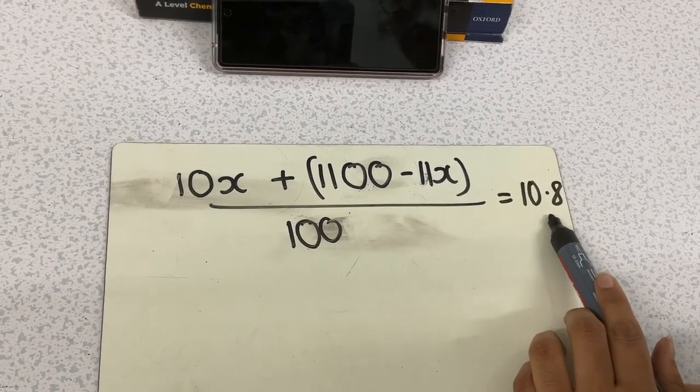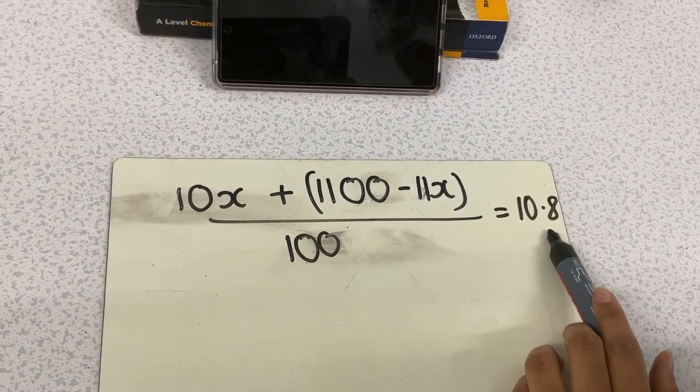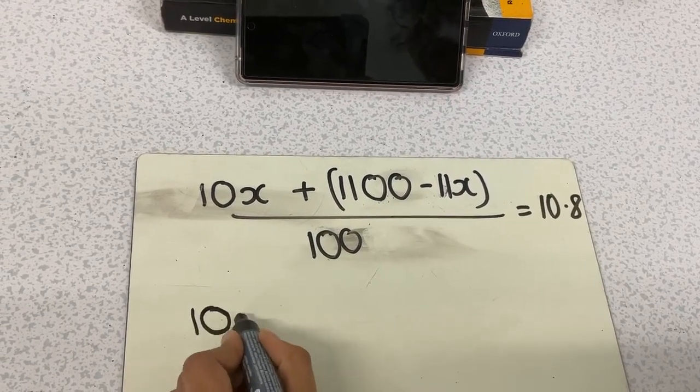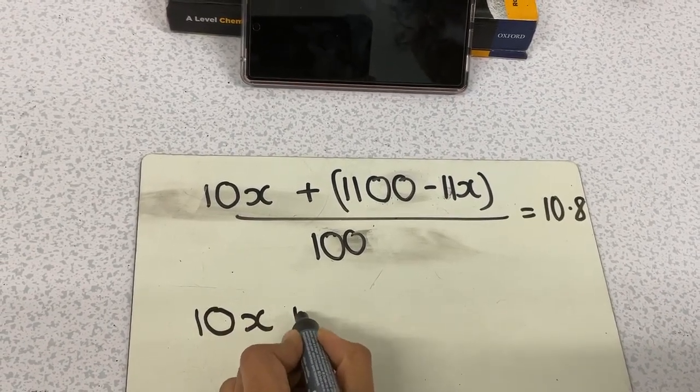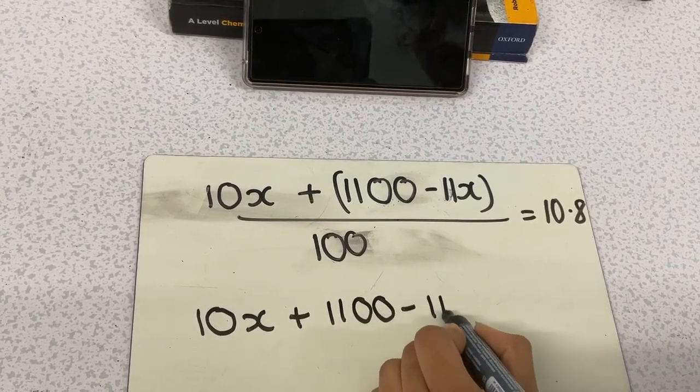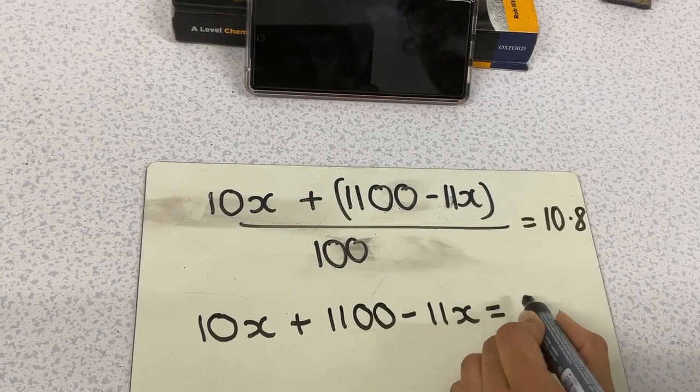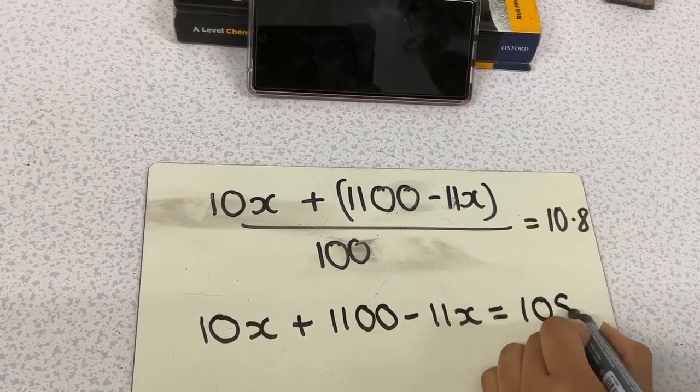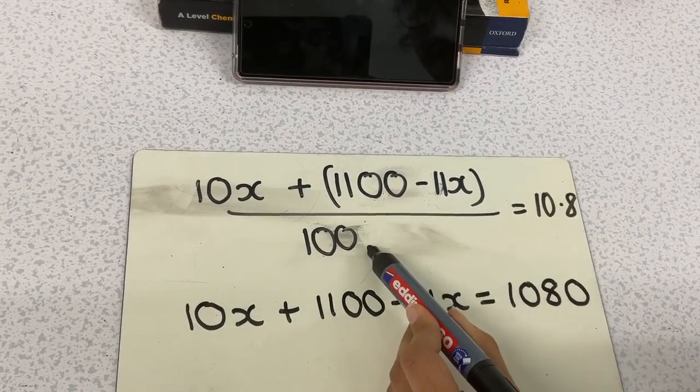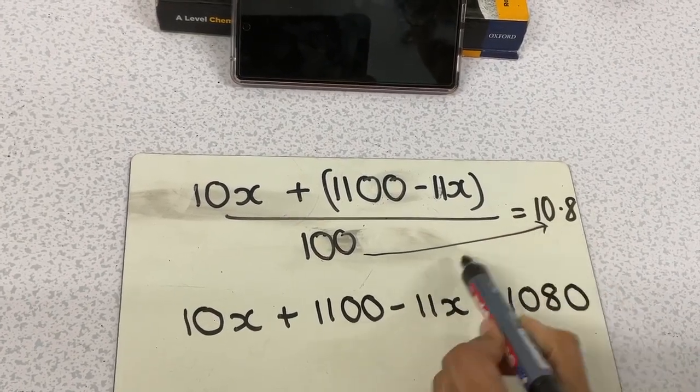This equation equals the 10.8 that we were given in the question. So, expanding our bracket, we get 10x plus 1100 minus 11x equals 10.8. And what we're going to do with the 10.8 is times it by 100 to get rid of that fraction.